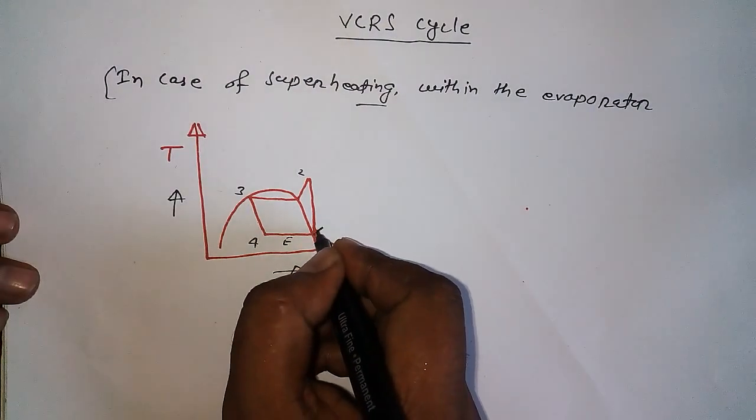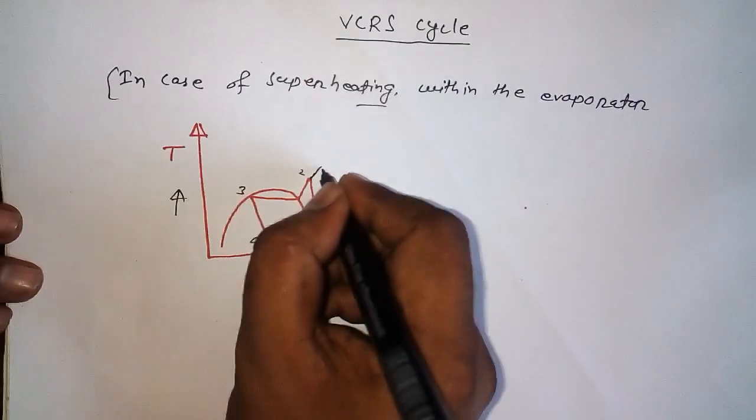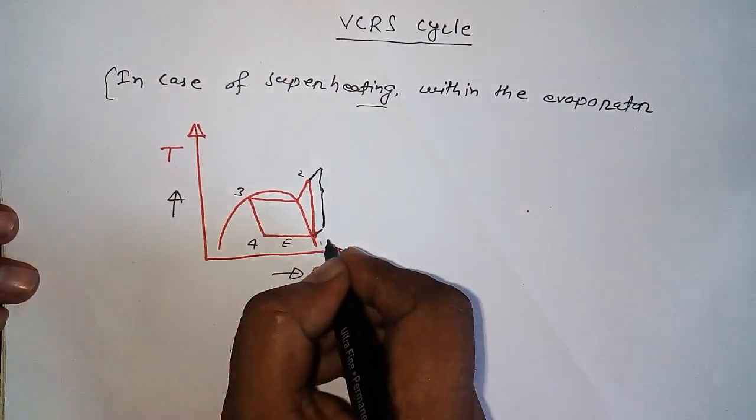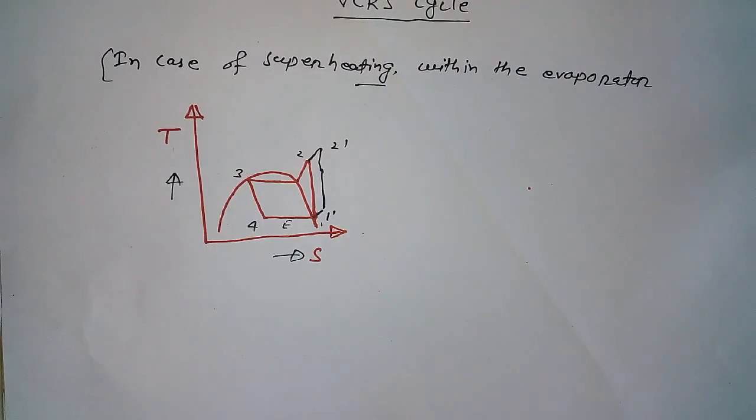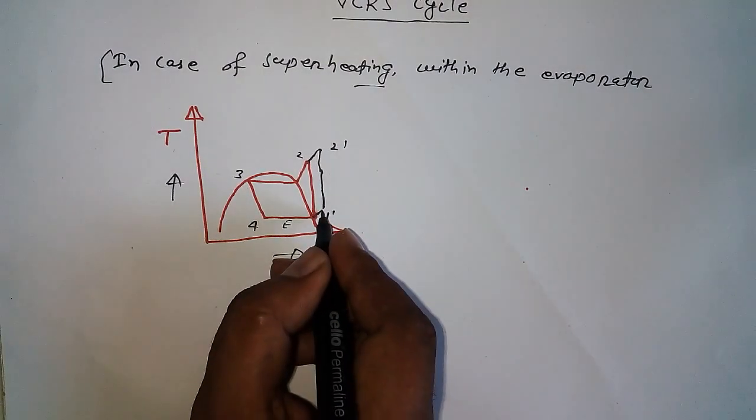If we do superheating, then this would be like this. This would be 1 dash and this would be 2 dash. Suppose we have the superheating state here and here.